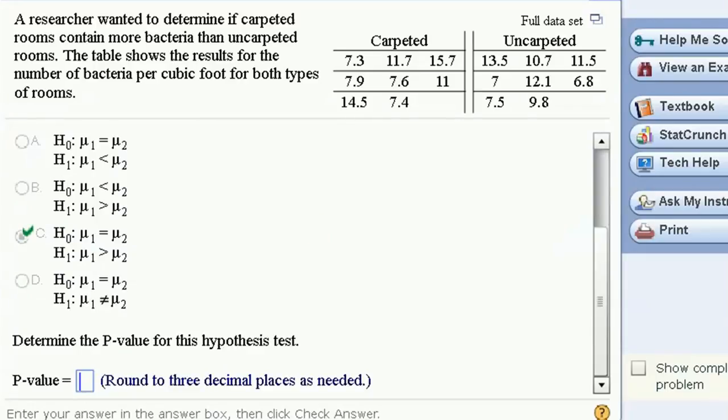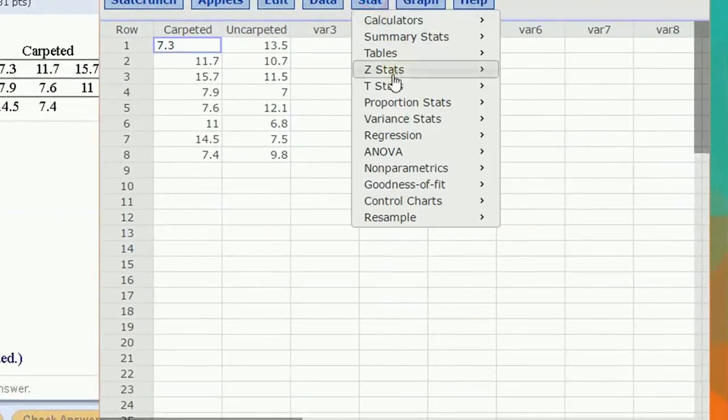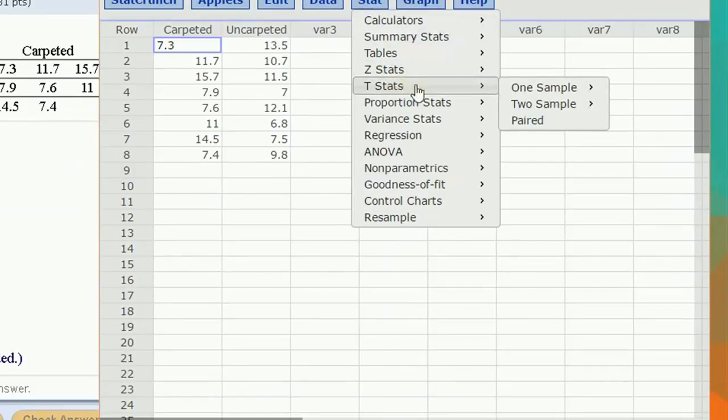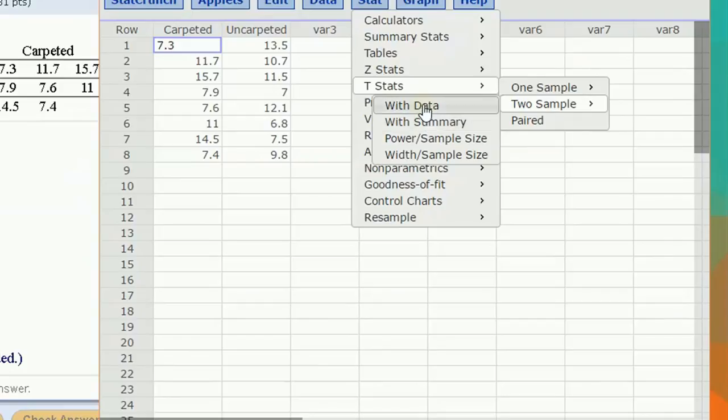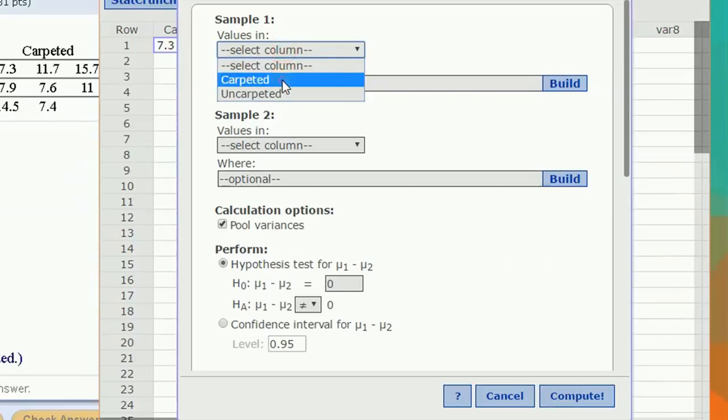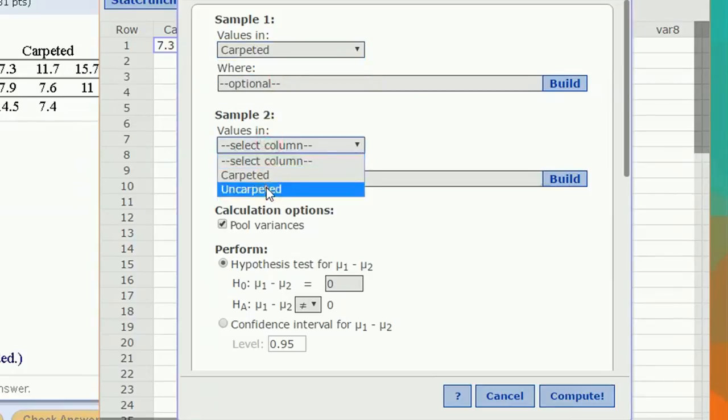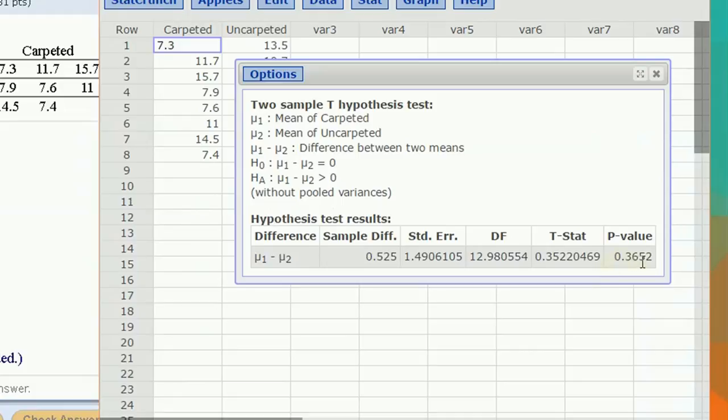Now let's go to StatCrunch and let's calculate this. From the t stat for two sample, I want to choose with data because I've got data in my columns. Column one is my carpeted. That's sample one. And then choose uncarpeted for sample two. Again, do not pool variances. I'm not assuming that they have the same variance. And my null hypothesis mu1 minus mu2 equals zero. The alternative mu1 minus mu2, match it up, it's greater than zero. The same sign, the same inequality sign. Compute and see what we get.